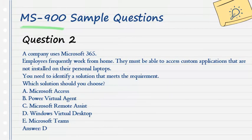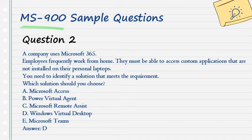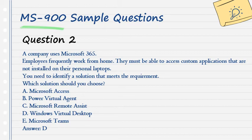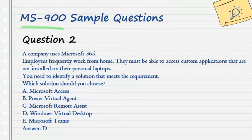Question 2. A company uses Microsoft 365. Employees frequently work from home. They must be able to access custom applications that are not installed on their personal laptops. You need to identify a solution that meets the requirement. Which solution should you choose? A. Microsoft Access. B. Power Virtual Agent. C. Microsoft Remote Assist. D. Windows Virtual Desktop. E. Microsoft Teams. Answer: D.